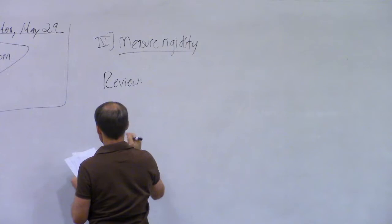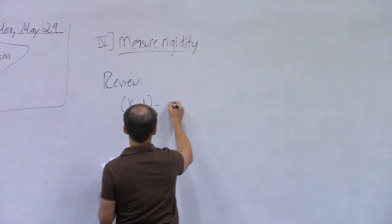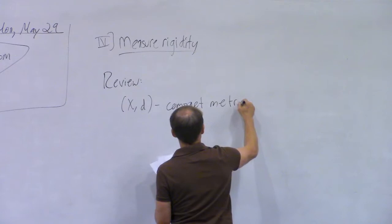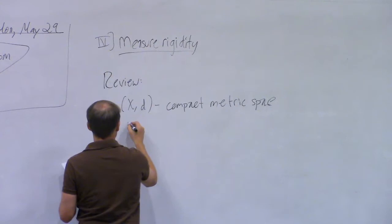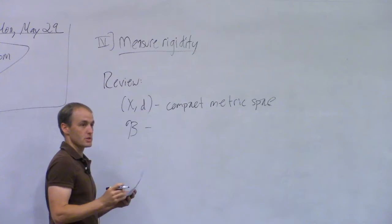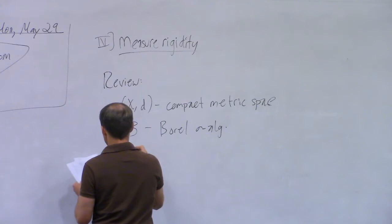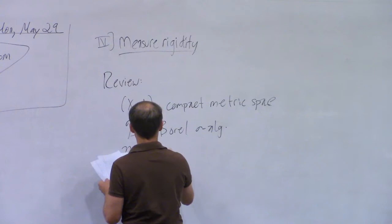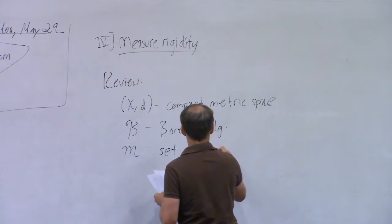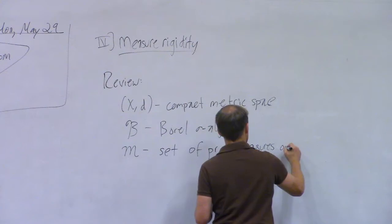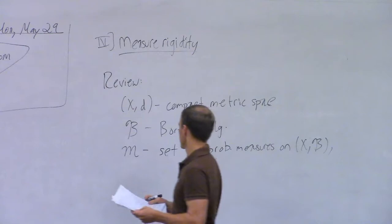Let me tell you my notation. I'm going to suppose that I'm working in a compact metric space — that makes life easy and makes the theorems very nice and clean. If I write script B, I'm talking about the Borel sigma-algebra, the sigma-algebra generated by the collection of all open sets. If I write script M, that denotes the set of all probability measures on the measurable space (X, B).